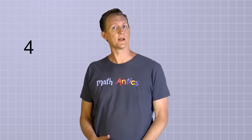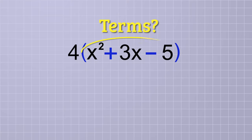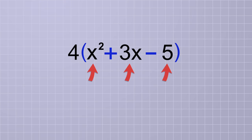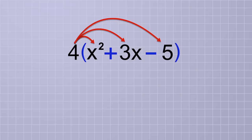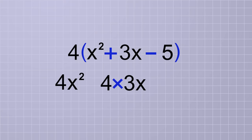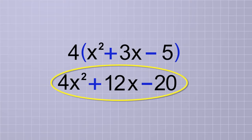Let's try another example of a factor times a polynomial: 4 times the group x squared plus 3x minus 5. First, we need to identify the terms of this polynomial so when we distribute the factor, we just make one copy of it for each term. This polynomial has three terms: x squared, positive 3x, and negative 5. So we distribute a copy of the factor 4 to each term and we get 4x squared, 12x since 4 times 3 is 12, and 4 times negative 5 which is negative 20. So the equivalent distributed form is 4x squared plus 12x minus 20.